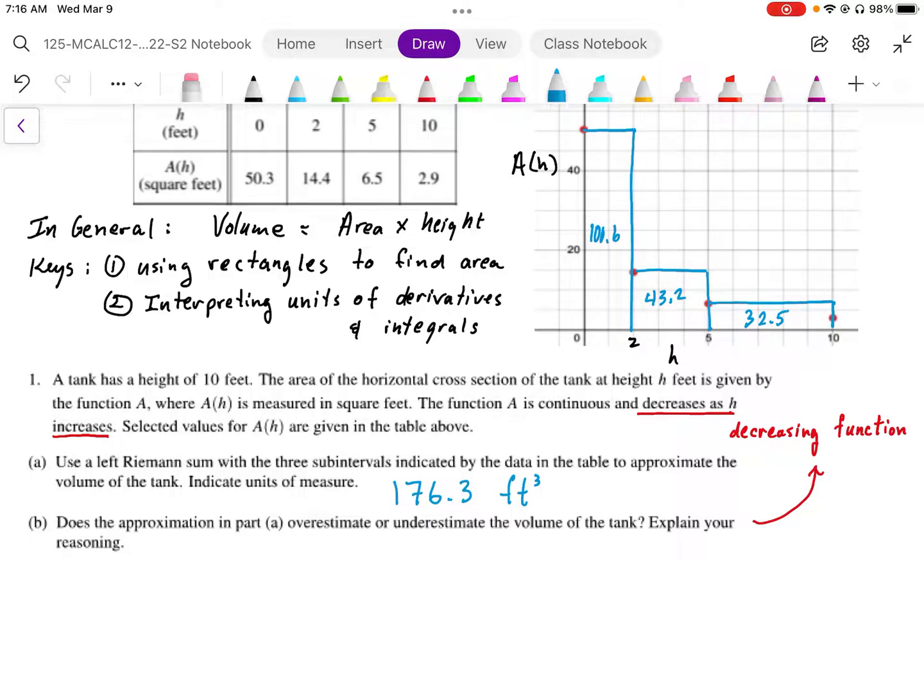Part B says: does the approximation in Part A overestimate or underestimate the volume in the tank? Explain the reasoning. The key in this is, this is a decreasing function. It's a strictly decreasing function.